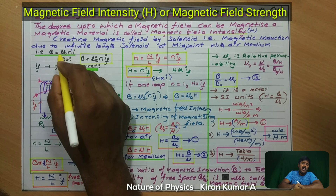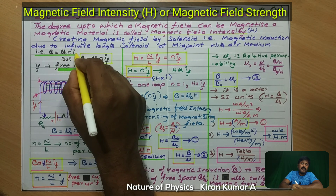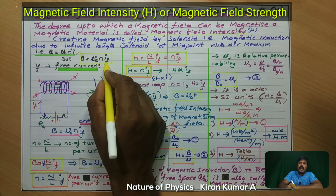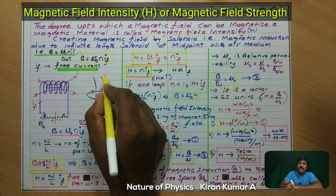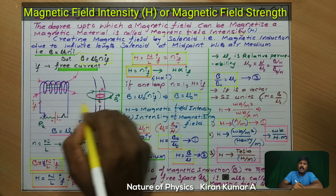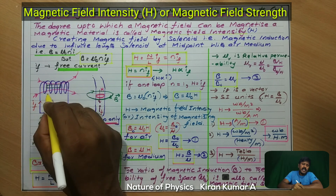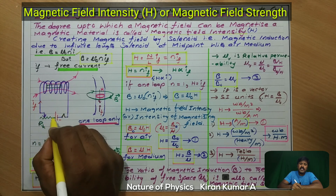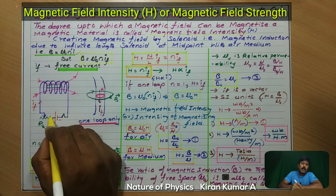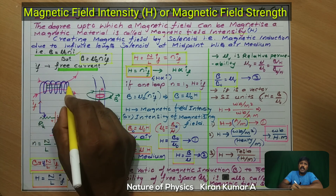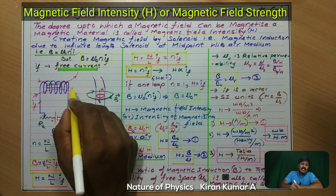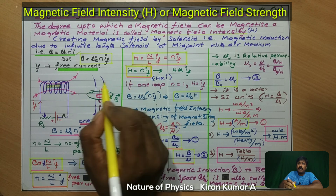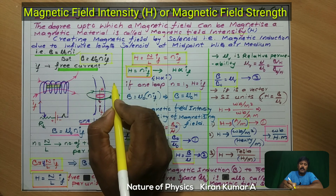The magnetic induction due to an infinite length solenoid at the midpoint is given by the basic formula: B = μ₀nI. Here, I is taken as If, the free current. This is represented clearly in the diagram showing a solenoid connected to a battery at the positive and negative terminals. A rheostat is used to change the current in the solenoid, producing a magnetic field. The material gets magnetized inside the solenoid because of the magnetic field produced.